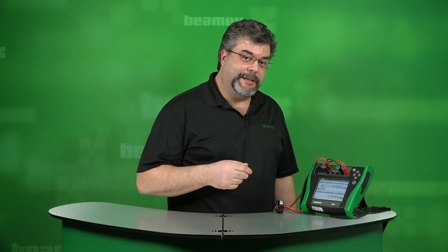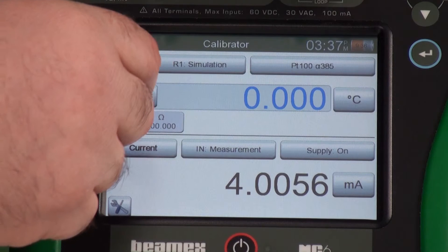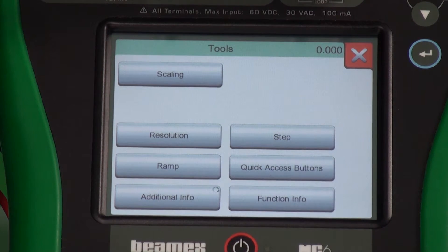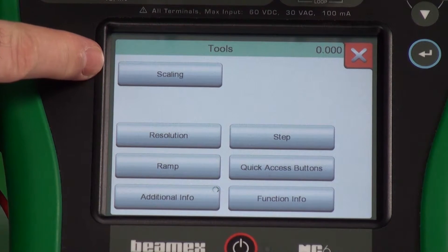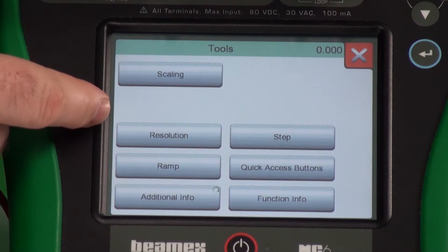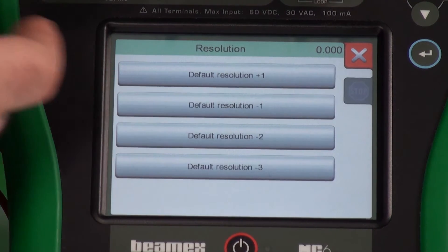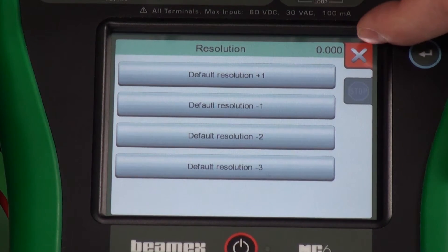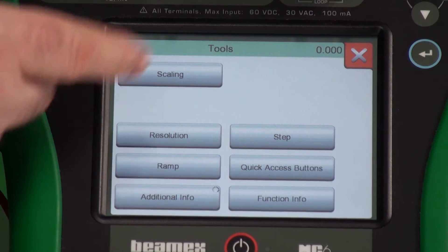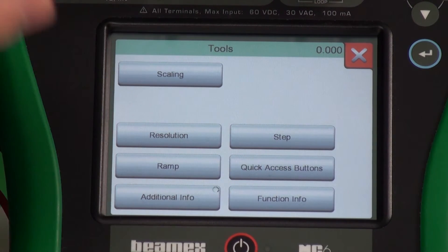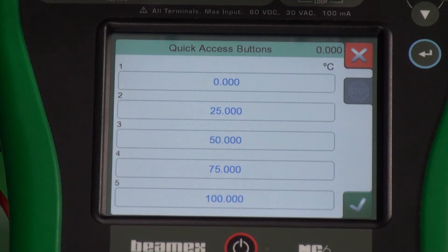Now let's take a look at some other tools. On the input side, we have scaling. I'll show you what that is here in a second. Resolution, we can change the number of decimal places, increasing or decreasing. Stepping, ramping. There's also quick access buttons. Let's take a look at those.